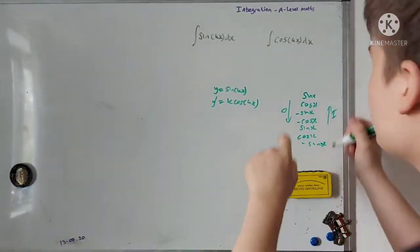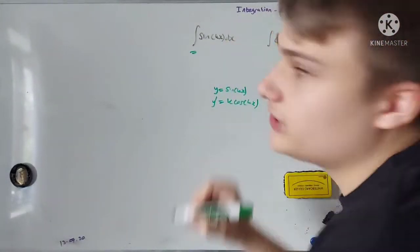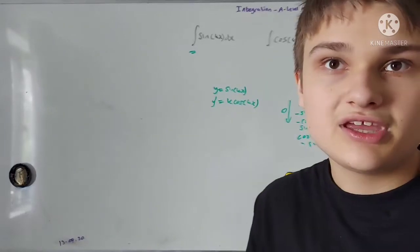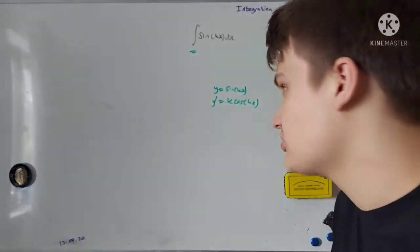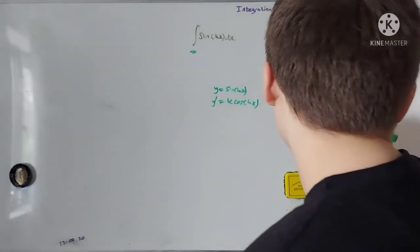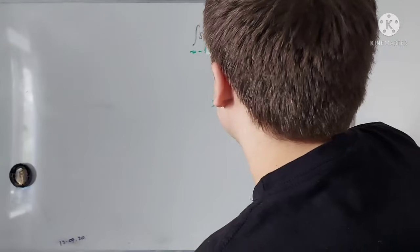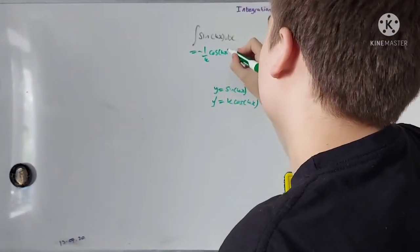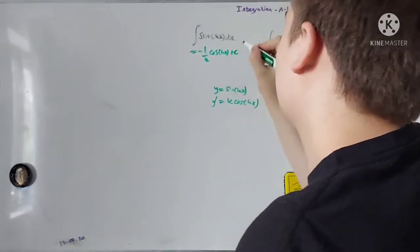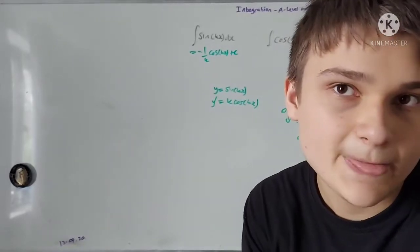So if I wanted to integrate sine of kx, for example — sine integrates to minus cosine going up in this cycle — so I get minus 1 over k, cosine of kx, plus the constant of integration.